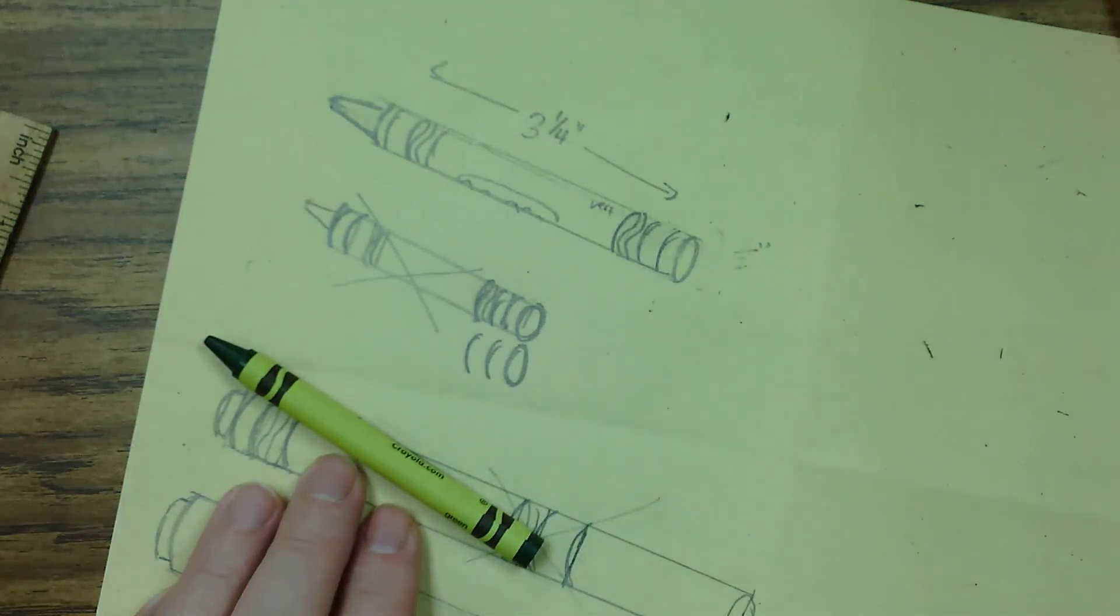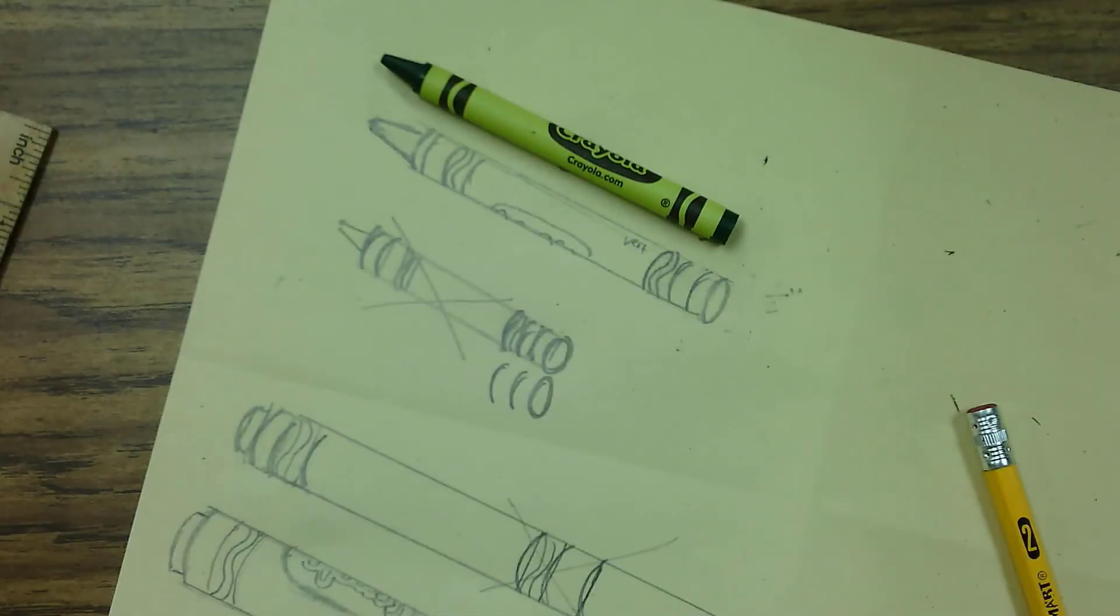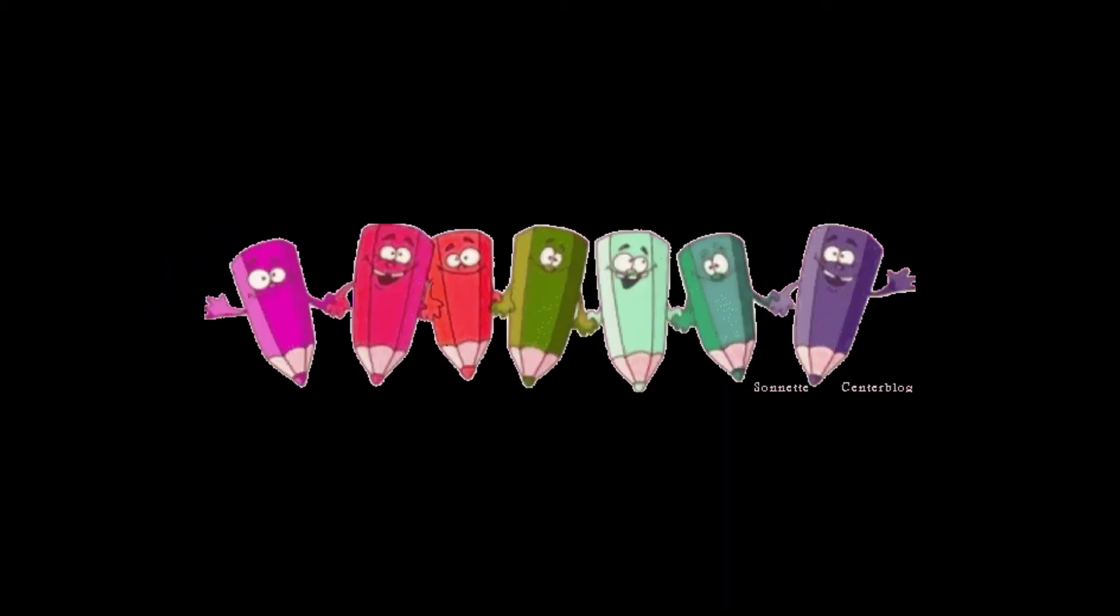Make sure you can see the bottom of your crayon. Curved lines are good. All right guys, that's it for the crayon tutorial. We'll see you next time. Bye!